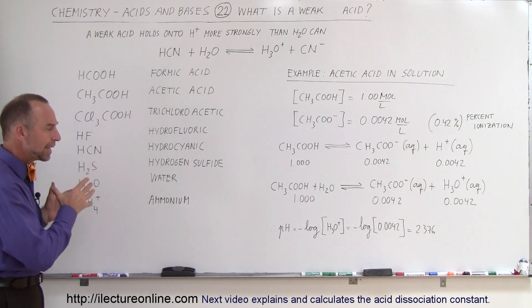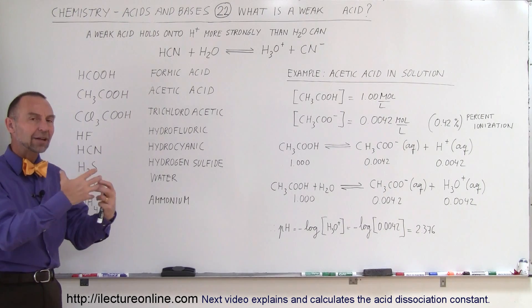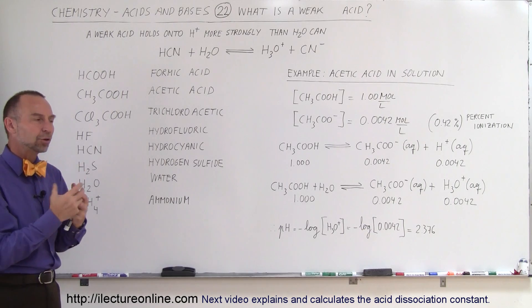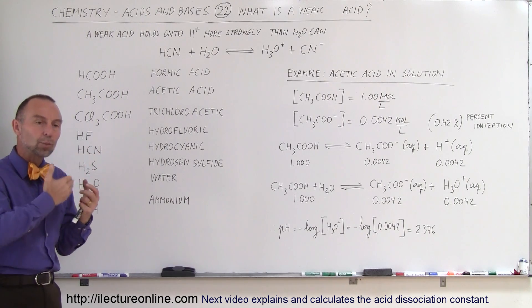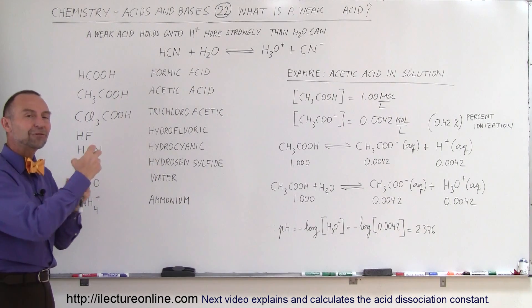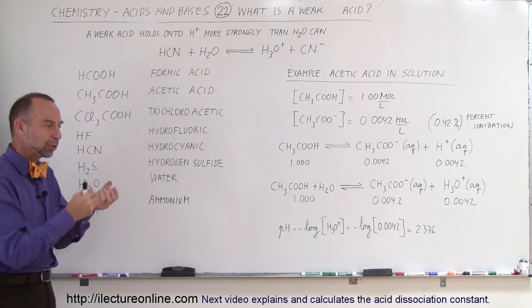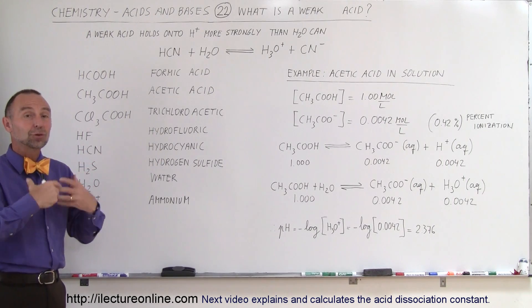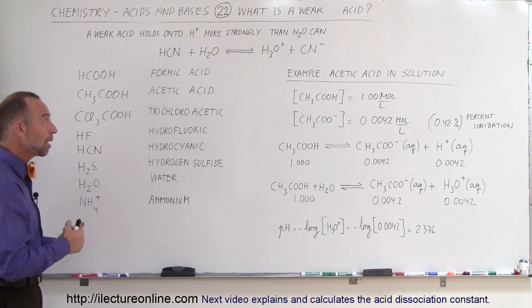So when you have a weak acid, that means most of the hydrogen ions stay with the acid molecule, and a small percentage of them will be ripped away from the acid molecule and donated, so to speak, to the water molecule, turning the water molecule into a hydronium molecule.